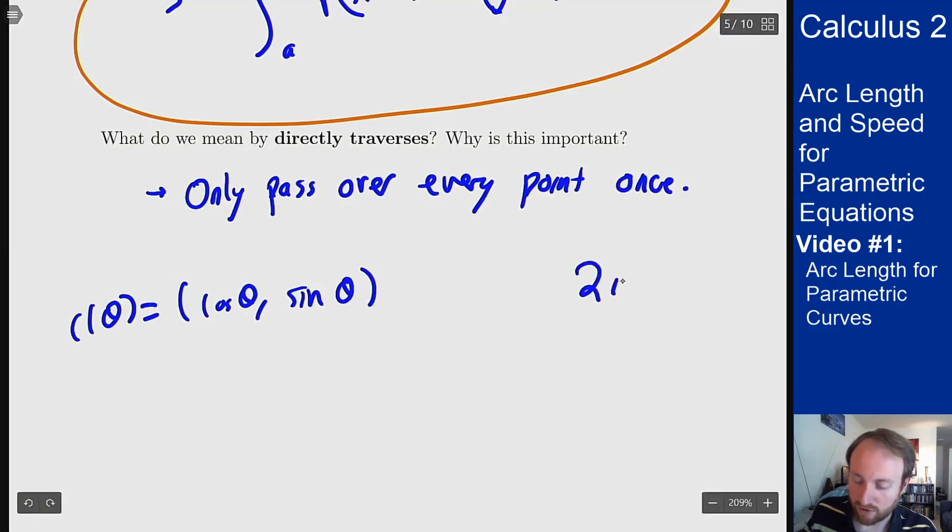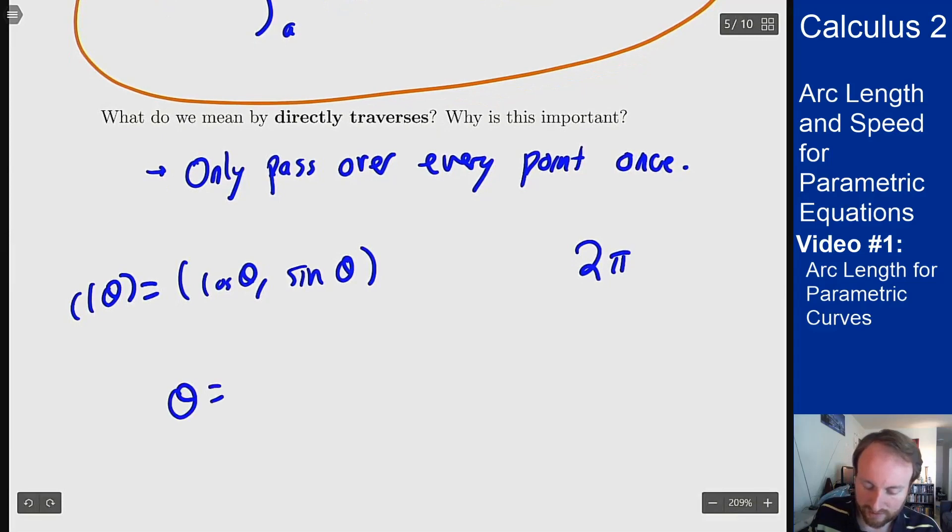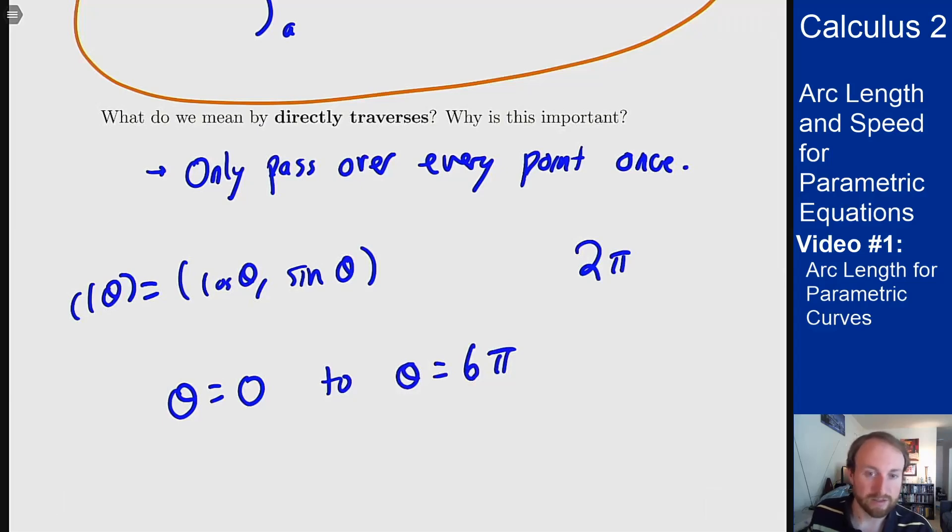Now the issue here is if you want to find the length of the circle or the perimeter of the circle I know this should be 2π because it's 2πr. However if I go from θ equals 0 to θ equals 6π, I've gone around the circle three times in that window. 2π will get me once around the circle and that gives you the length of 2π. But if I do to 6π I'll go around the circle three times which doesn't directly traverse the entire curve because it passes over it more than once. This would give me an arc length of 6π but that's only because I've gone around the circle three times.